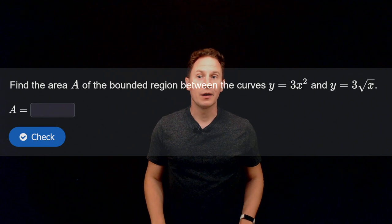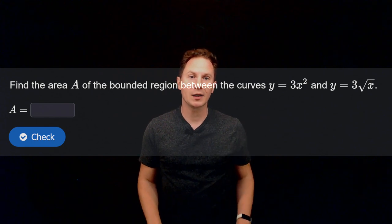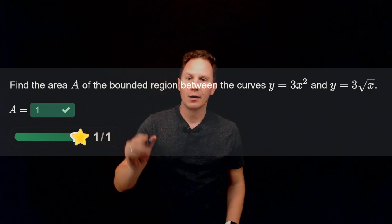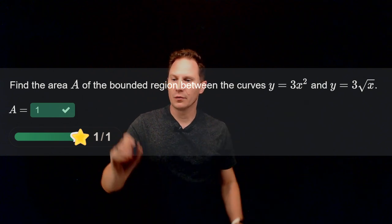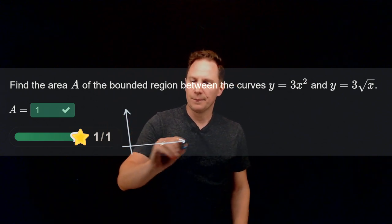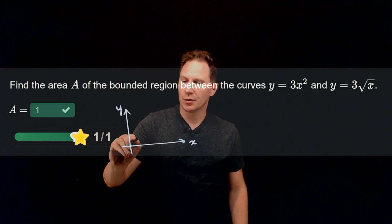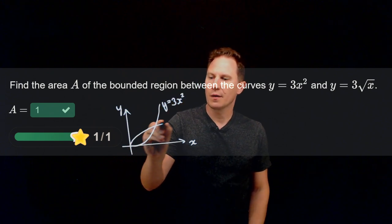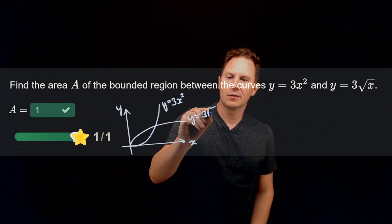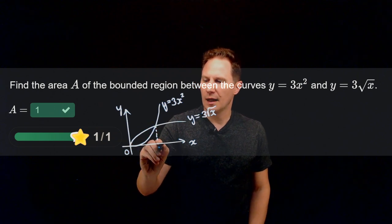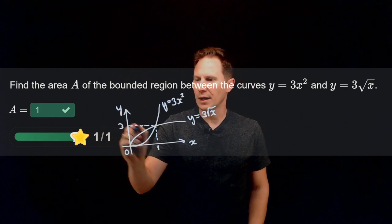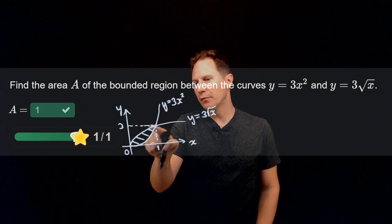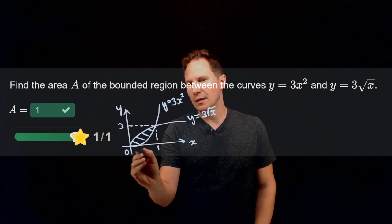Next question: find the area of the bounded region between the curves y equals 3x squared and y equals 3 times the square root of x. Plotting these graphs gives two parabolic arcs. The intersection points are at the origin and at the point where x equals 1 and y equals 3. Notice that 3 times the square root of x is above 3x squared over the interval between 0 and 1.